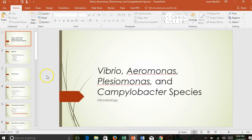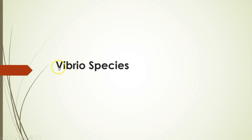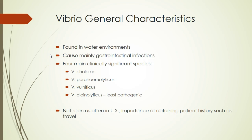Let's go to the next PowerPoint on Vibrio, Aeromonas, Plesiomonas, and Campylobacter — also all gram-negative rods. Vibrio species are found in water environments and cause a lot of GI-type infections. There are four clinically significant species: Vibrio cholerae, Vibrio parahemolyticus, Vibrio vulnificus, and Alginolyticus, though that last one isn't very pathogenic. We typically do not find Vibrio in the U.S. Patient travel history is key — if the patient recently traveled, we'll screen for Vibrio.